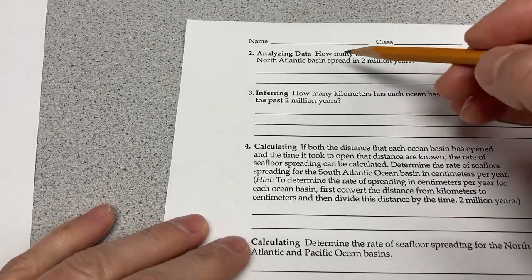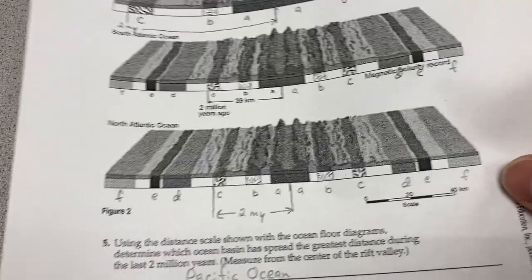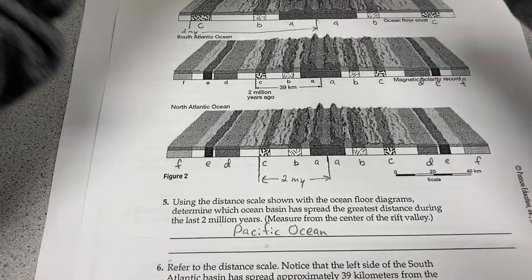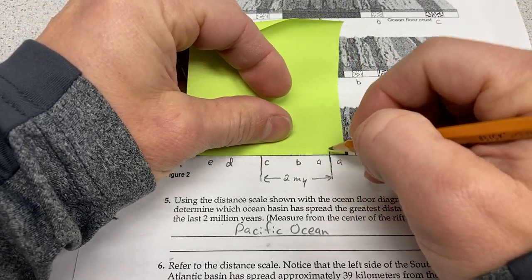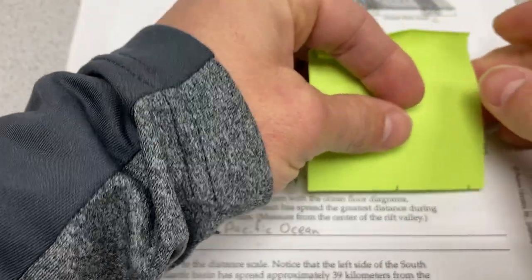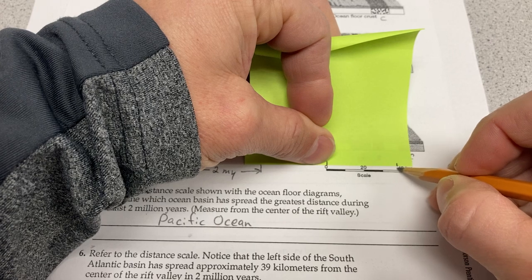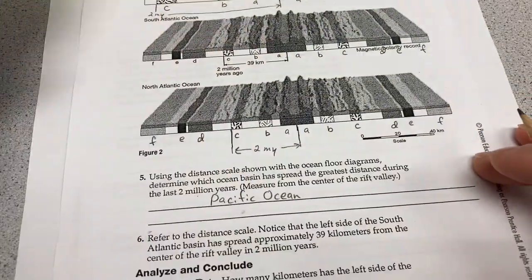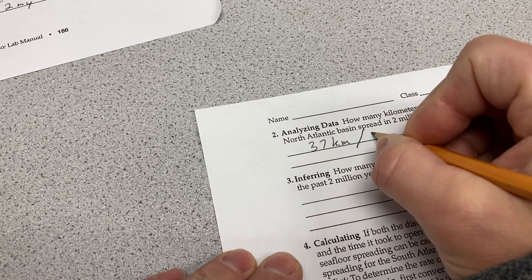How many kilometers has the left side of the North Atlantic Ocean spread in 2 million years? Let's see — the North Atlantic. I'll show you using a piece of paper. We want to know the distance from the center to the 2-million-year mark. Holding it up to the scale, since that's 40 kilometers, we have to make a little bit of a guess here — I'm going to say 37 kilometers. It's pretty close to 40. So the North Atlantic is approximately 37 kilometers per 2 million years.